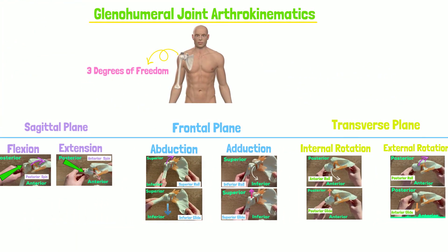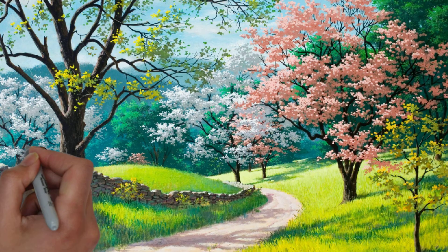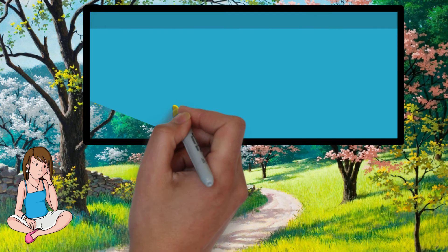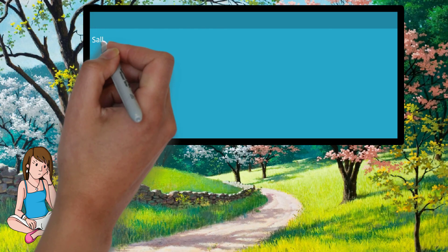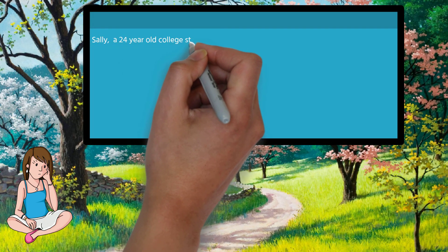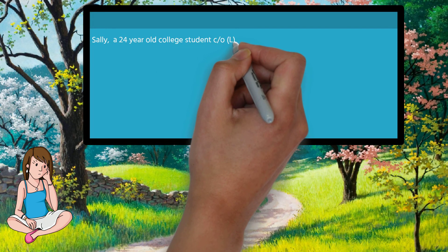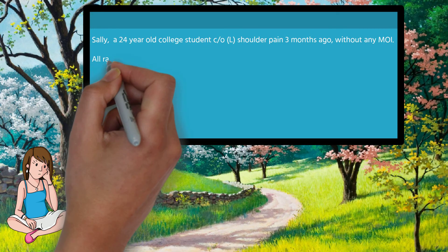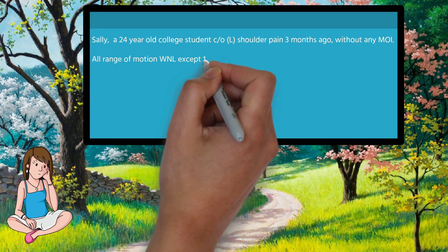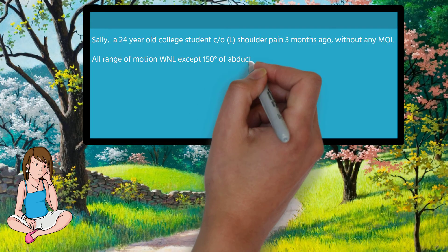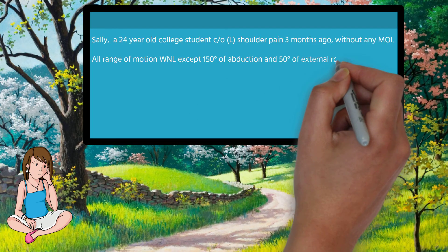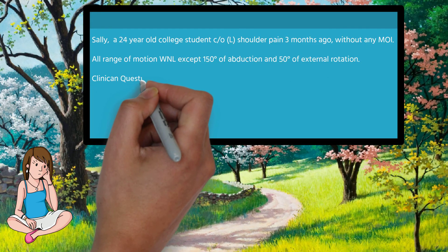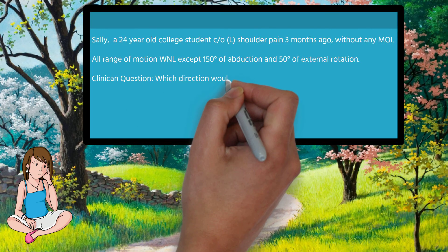Let's examine a clinical scenario to which we can apply the arthrokinematics we just learned. Sally is a 24-year-old college student complaining of left shoulder pain for about three months without any mechanism of injury. All range of motion was found to be within normal limits except abduction was limited to 150 degrees and external rotation was limited to 50 degrees.